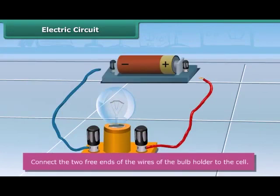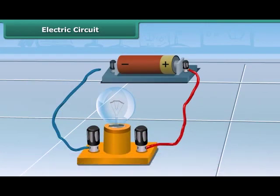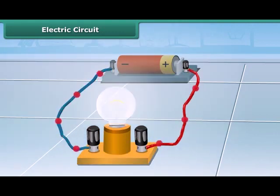Connect the free end of one wire to the positive terminal of the cell and the free end of the other wire to the negative terminal of the cell. This may be done with the help of a rubber band or adhesive tape. After the connection, you can see that the bulb lights up.